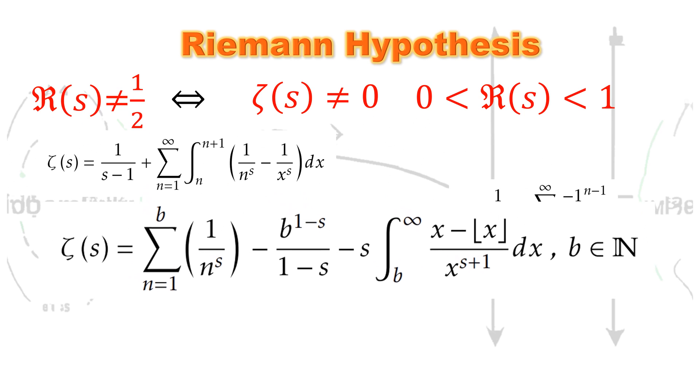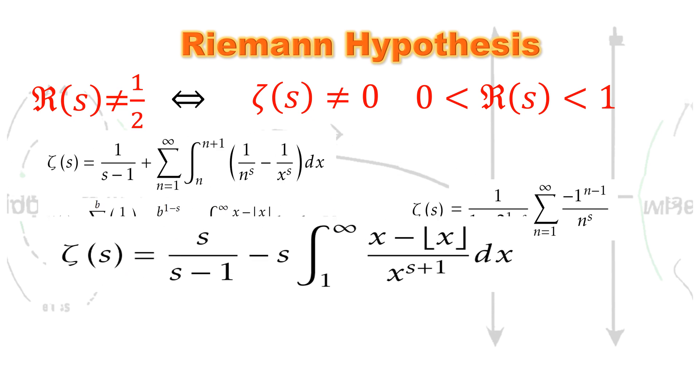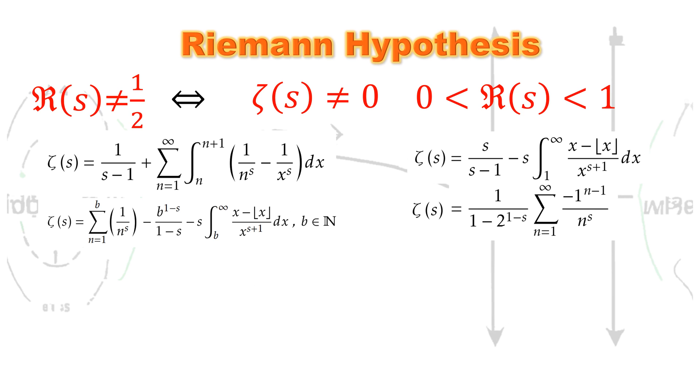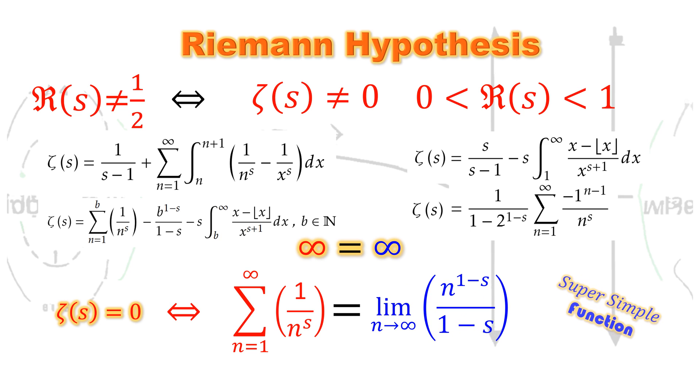Also, notice that it is impossible to integrate these functions, so difficult indeed that Riemann himself couldn't integrate his functions. Now it should be easy to see how this new indeterminate form simplifies Riemann's hypothesis to the simplest zeta function and a super simple function with one term only.